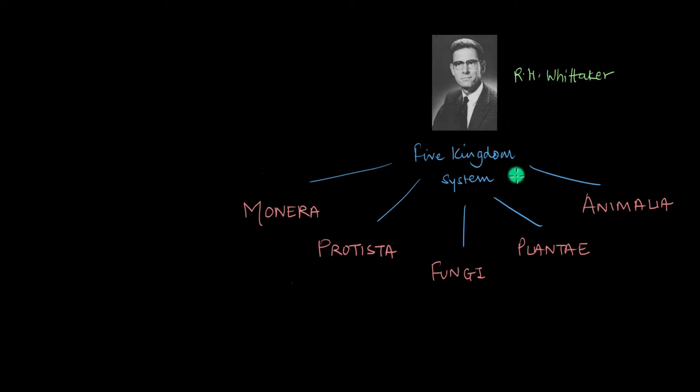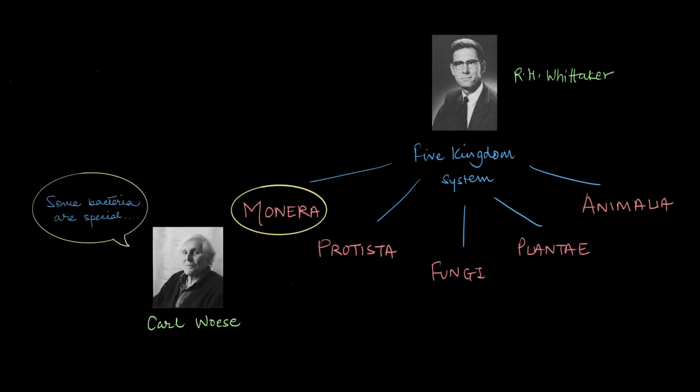Back in the day, R. H. Whittaker's Five Kingdoms system became one of the most well-made classification systems to ever exist. It classified all known organisms as accurately as possible and addressed several issues that previous systems had. But then, in the 1970s, Carl Woese found out that not all Monerans were the same.